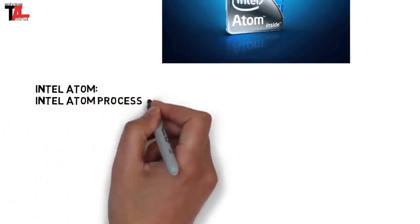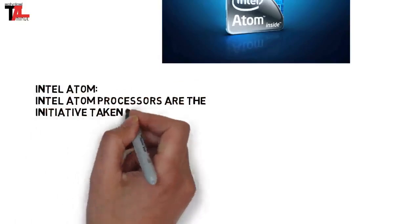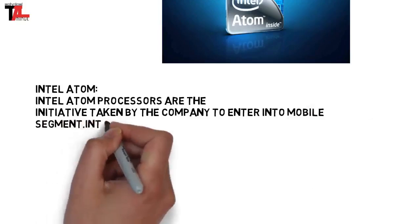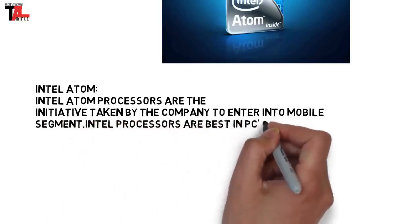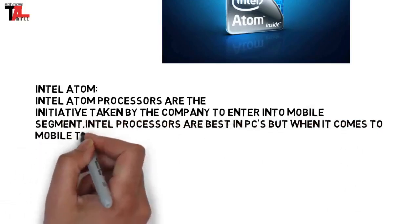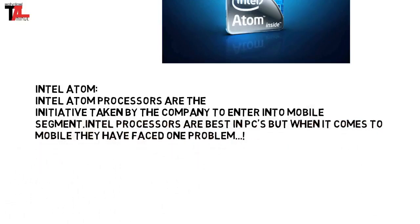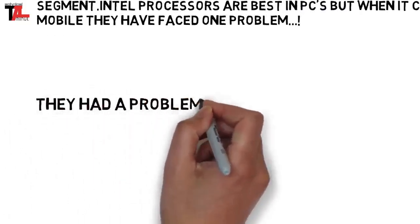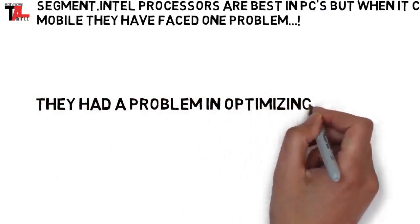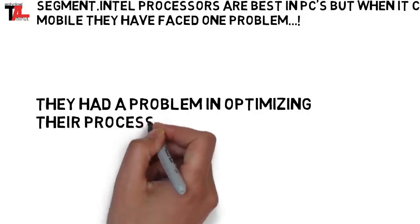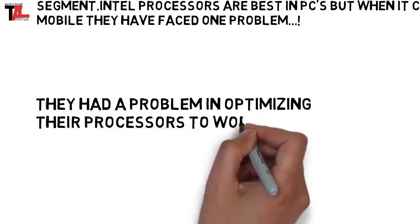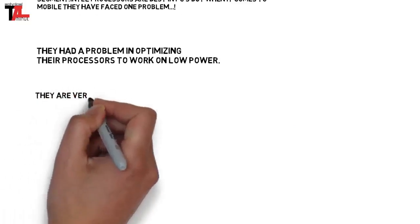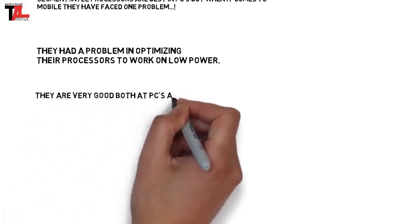Coming to Intel Atom — everyone is familiar with Intel processors because they are dominant in the PC market. Intel Atom processors are the initiative taken by the company to enter into the mobile segment. Intel processors are great in PCs, but when it comes to the mobile market they have faced many problems, particularly in battery life. Intel has experience manufacturing processors for PCs which consume power in watts — say 40 watts and above — but in the mobile platform where the processor should run on less than 5 watts, they had problems optimizing their processor to work on low power.